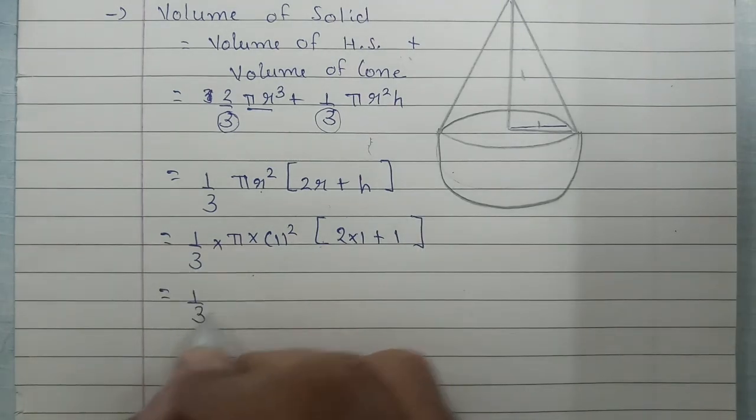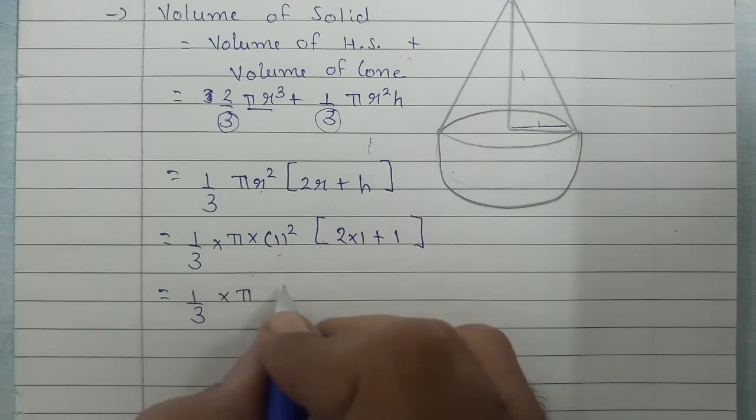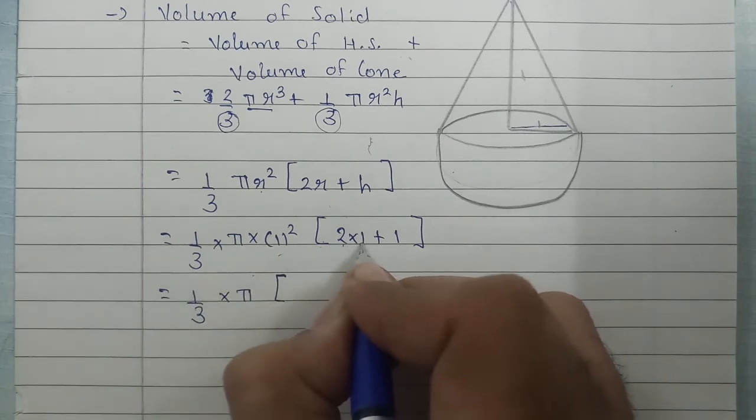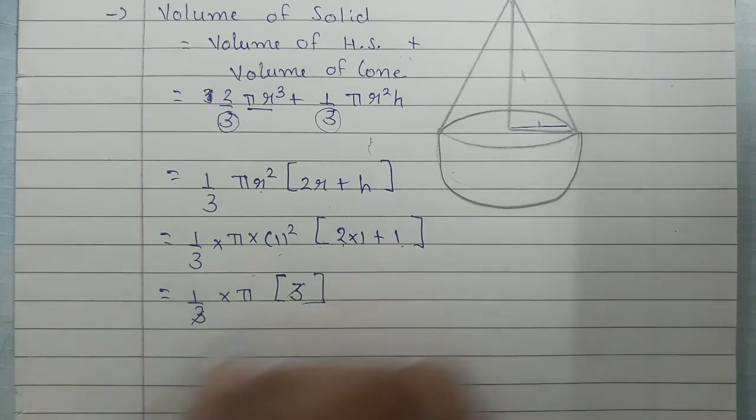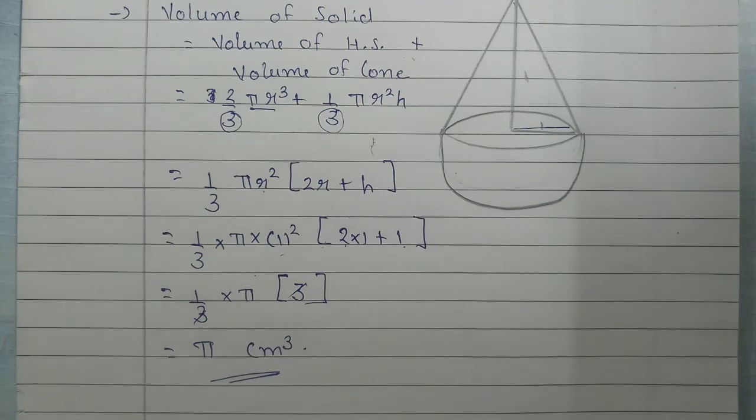Solving it further we have 1 by 3 pi, 1 squared is 1 which multiplies. Now 2 ones are 2 plus 1 that is 3. 3 and 3 cancel out, your answer will be pi centimeter cube. Clear?